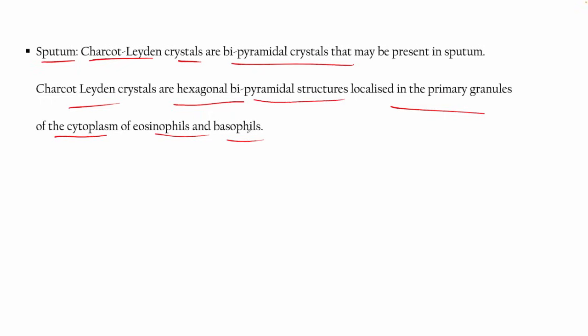You can also go for a sputum test, where Charcot-Leyden crystals — hexagonal bipyramidal structures — may be present. These are localized in the primary granule of the cytoplasm of eosinophils and basophils. You can also check IgE levels to see whether they are elevated or not.